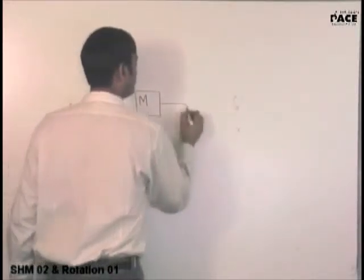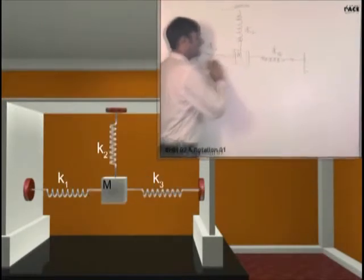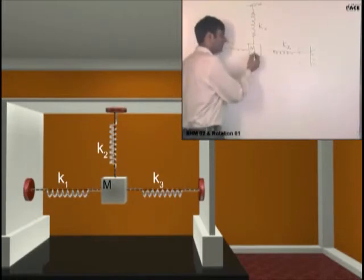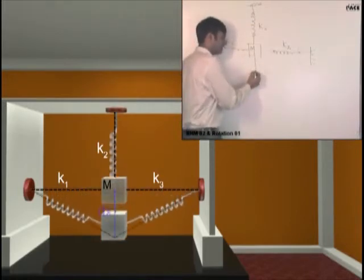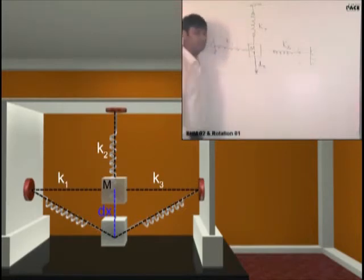There is a mass here, connected to springs. I will set up a problem where this is in equilibrium. There is no gravity, assume there is no gravity. Now I push it by dx, I gently disturb it along this direction, dx.